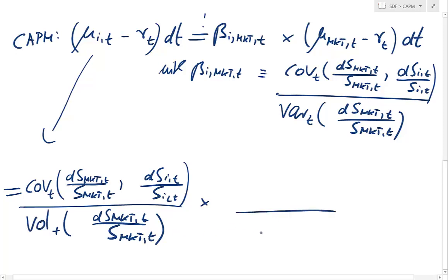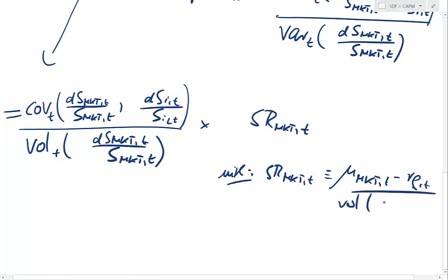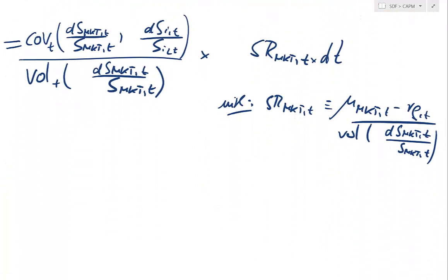I multiply by the risk premium of the market, which gives me the Sharpe ratio of the market at time t — the Sharpe ratio is just the risk premium divided by the volatility of the market — multiplied by dt. Now what I want to do is express the covariance for the market shock and the asset i shock as instantaneous covariation.